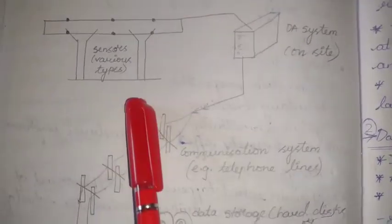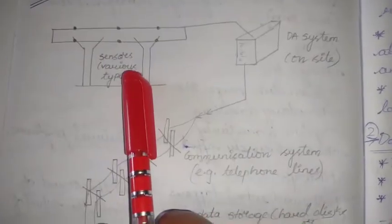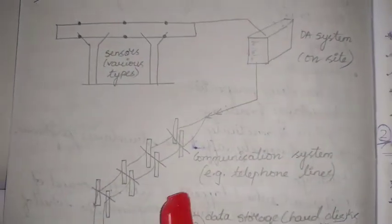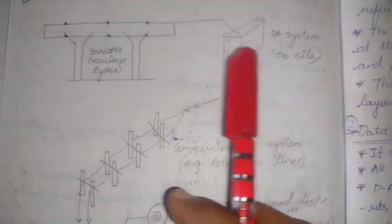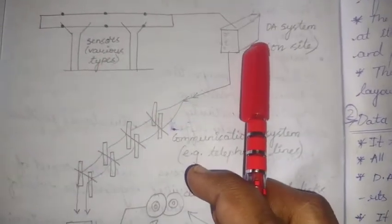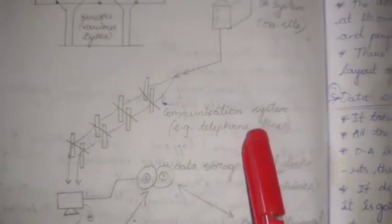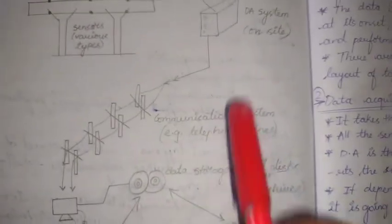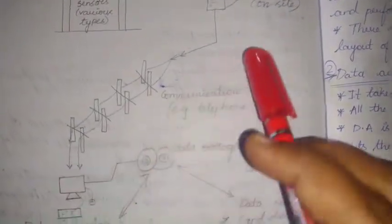The first component is sensors — sensors measure whatever the physical quantity of damage is there in the structure and send it to the computer. The second component is the data acquisition system, which collects the data from the sensors and transfers it to the next level. The third is the communication system, which transfers whatever data is acquired by the data acquisition system to the computer stage.